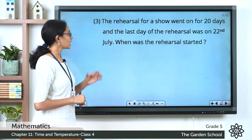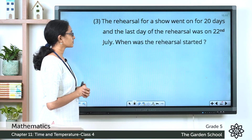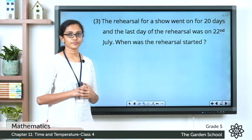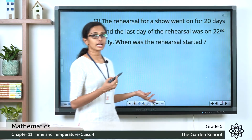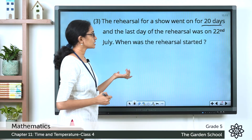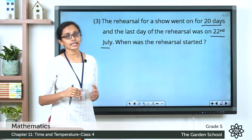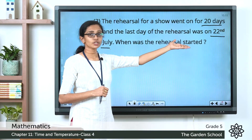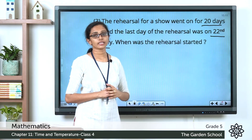Now we'll see one more question. The rehearsal for a show went on for 20 days and the last day of the rehearsal was on 22nd July. When was the rehearsal started? The duration of the rehearsal is 20 days and the rehearsal ended on 22nd July. We are asked to find out the starting day. It ended on 22nd July and lasted for 20 days, which means it started 20 days back from 22nd July.